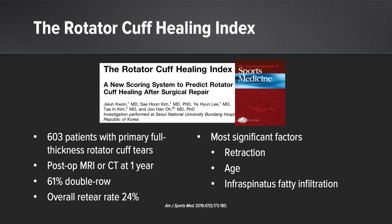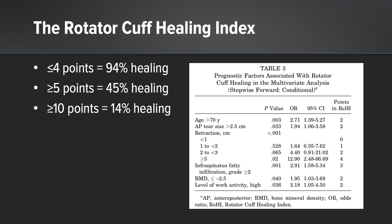This study out of Korea looked at 603 patients with full-thickness rotator cuff tears, all primary repairs, with postoperative MRI or CT scans at one year. Sixty-one percent had double row repairs — good constructs — yet their overall re-tear rate was still 24%, similar to what we saw earlier. They identified several significant factors: retraction, age, and infraspinatus fatty infiltration. They then took that one step further and developed the rotator cuff healing index.